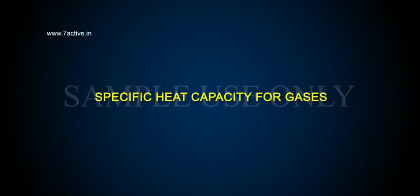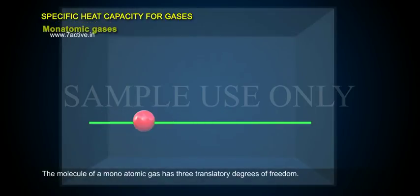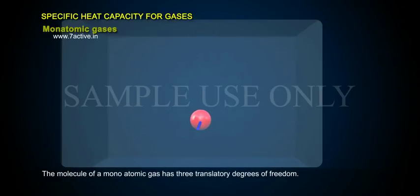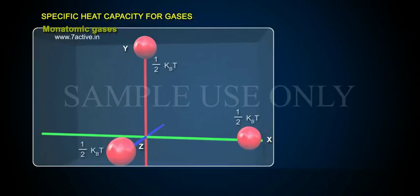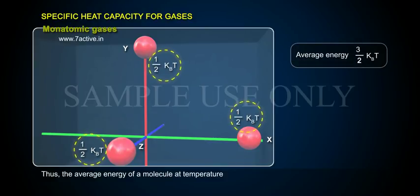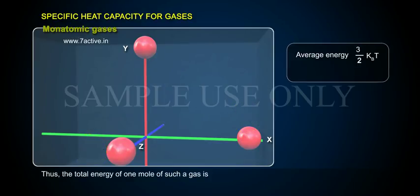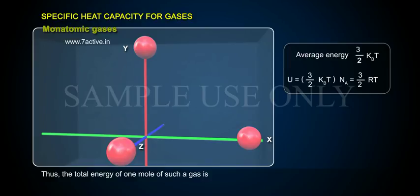Specific heat capacity for gases. Monatomic gases: the molecule of a monatomic gas has three translatory degrees of freedom. Thus, the average energy of a molecule at temperature T is 3/2 k_B T. The total energy of one mole of such a gas is U = 3/2 k_B T × N_A = 3/2 RT.